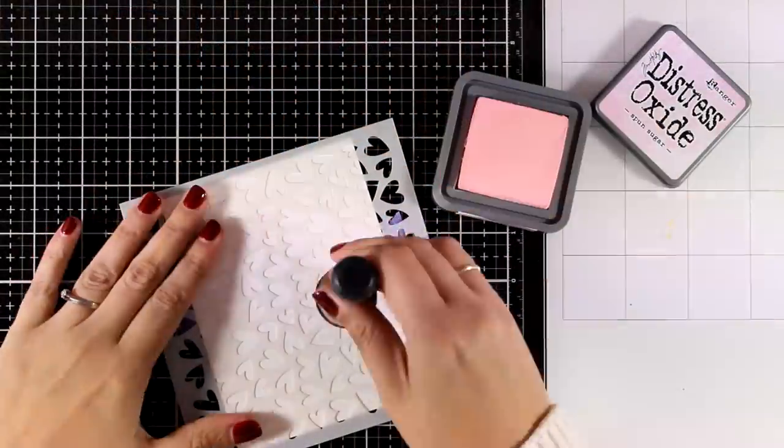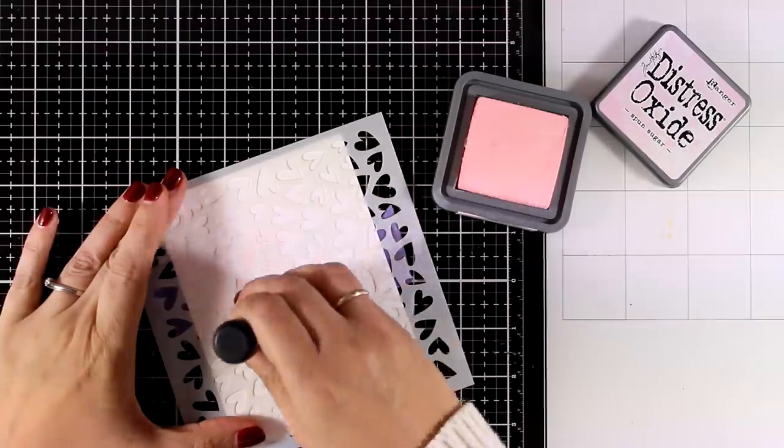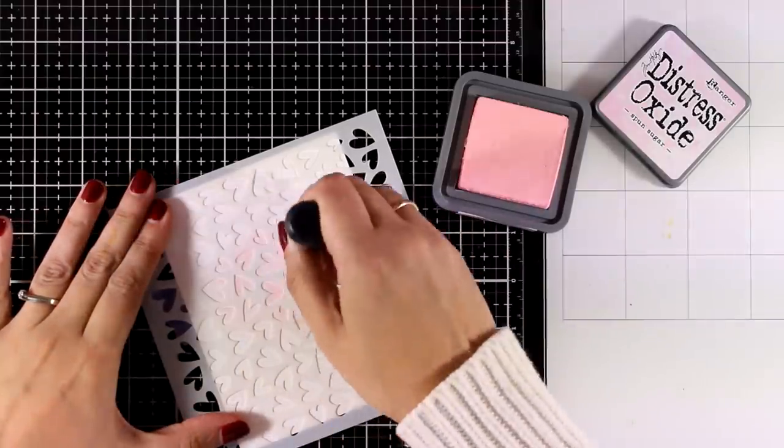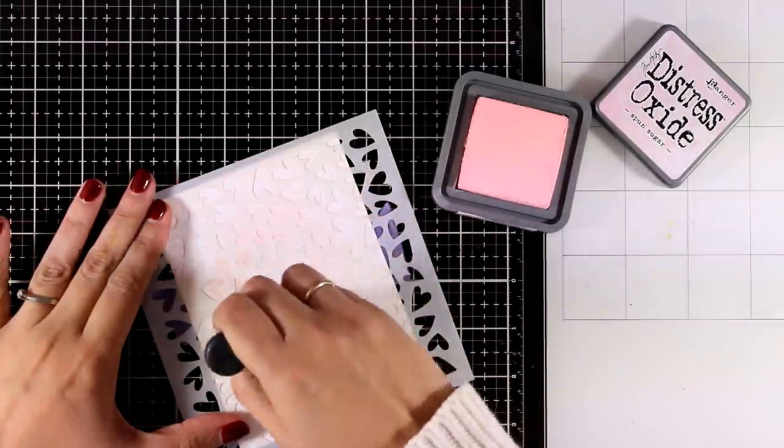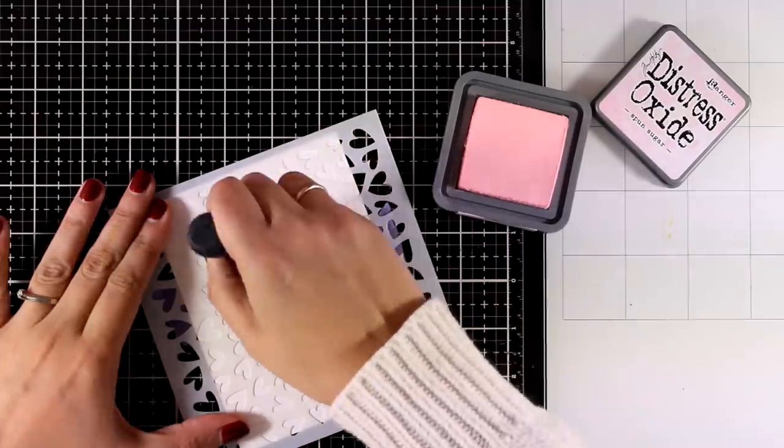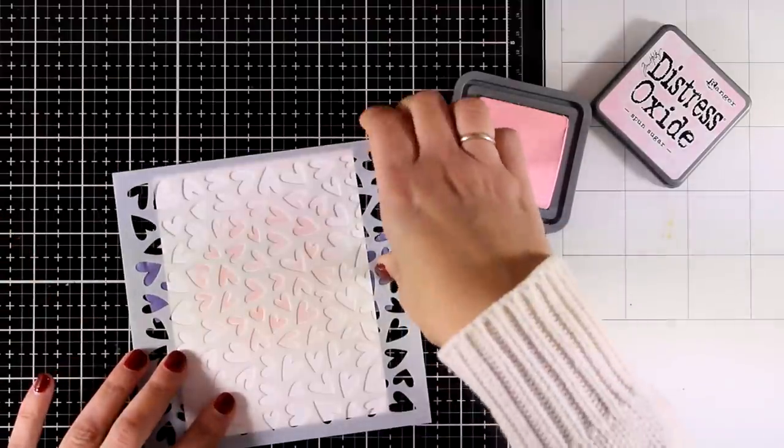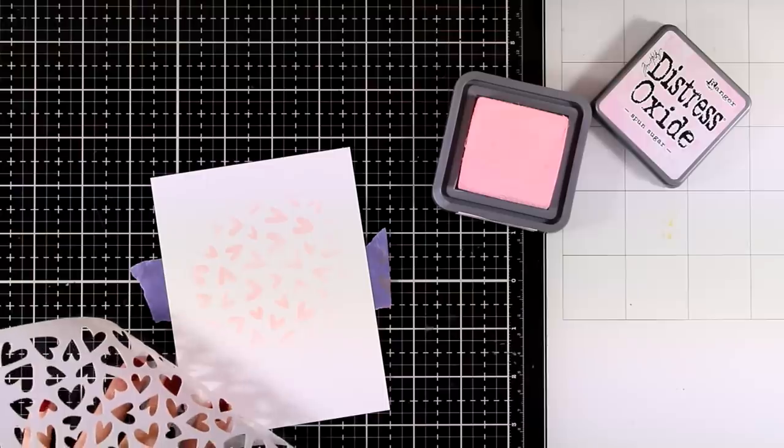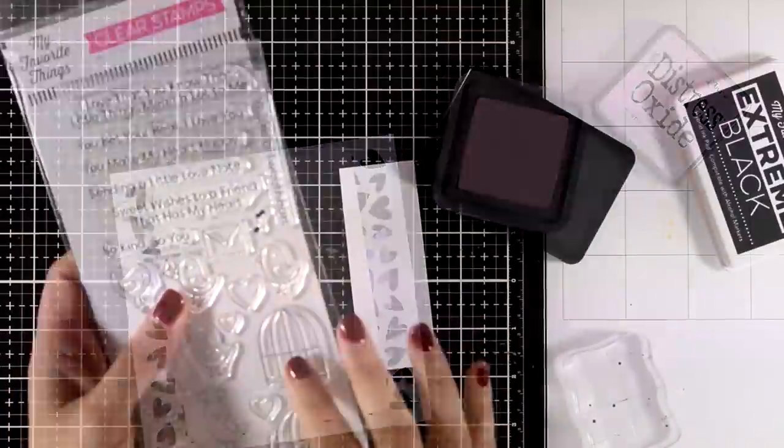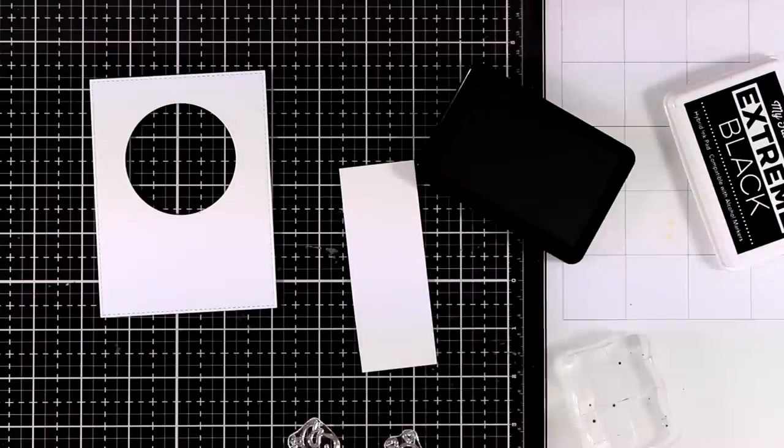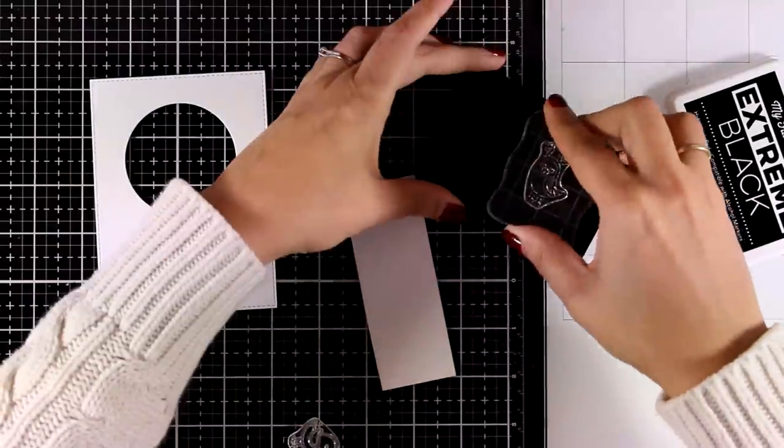For my next card I am preparing this piece of paper with Spun Sugar Distress Oxide Ink and I am just blending a little bit of color over the new stencil which is called Lots of Hearts. I don't need to cover it up completely. I am going to use just a part of this paper later on. Now I am going to do some stamping.